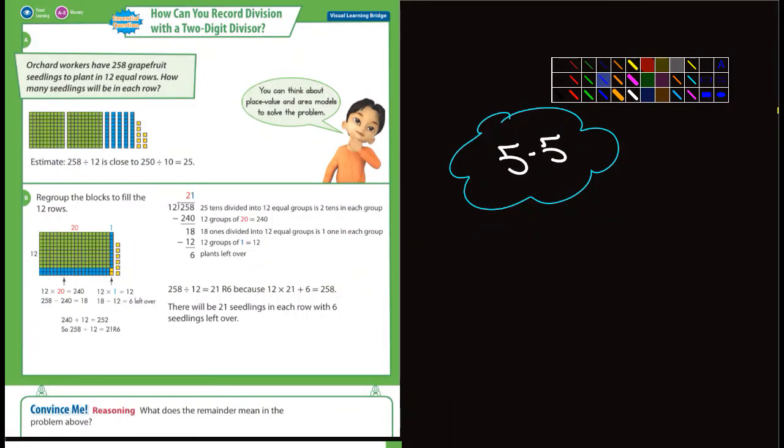Okay fifth graders, chapter 5 section 5, this is page 198 and we're talking about division again using two digits. They're talking about models in several examples here, and on this page they're talking about estimating 258 divided by 12. They said it's close to 250 divided by 10, which is true, which would be 25.